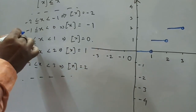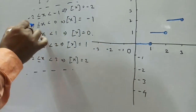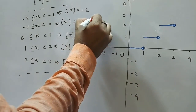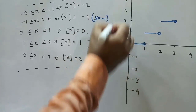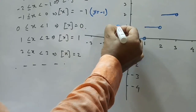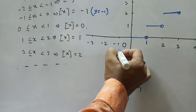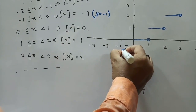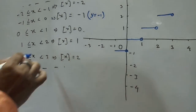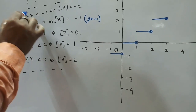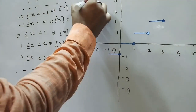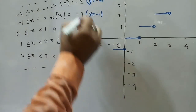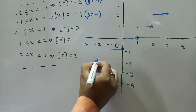On the negative side, when X lies between -1 and 0, Box[X] = -1. This gives Y = -1, a horizontal line from -1 to 0, open on the right. When X lies between -2 and -1, Box[X] = -2, giving Y = -2 from X = -2 to -1.